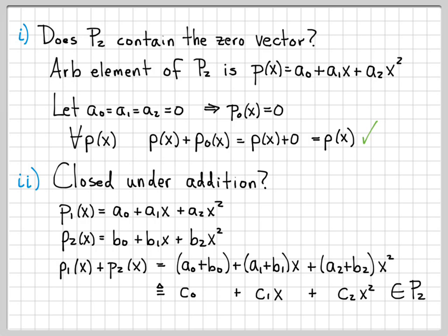All right, so this subset P2 has been a subset, it's been closed under addition, it has had a zero element, so it's passed the first two tests.